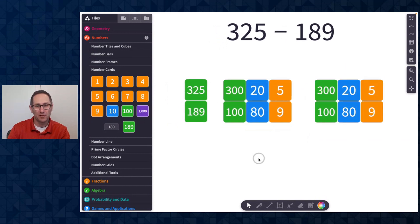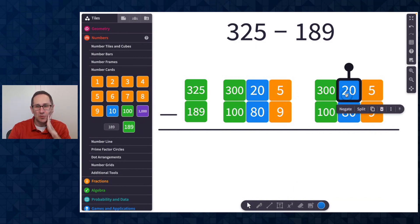So here's my subtraction problem. I'll go to the pen tool, use the ruler to draw a straight line, and just show that I'm doing a subtraction problem here. So 5 minus 9, the way I want to think about this is I'm going to take this 20.